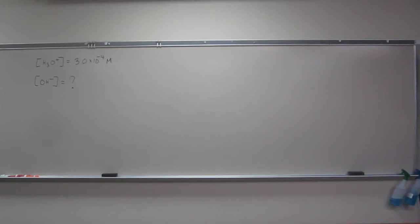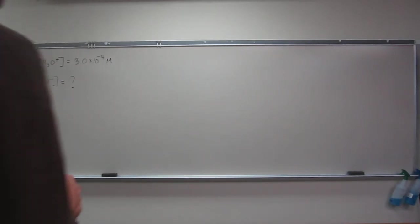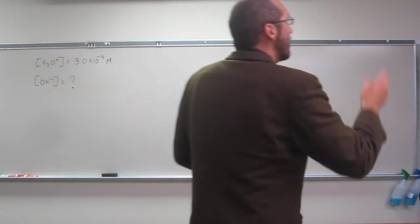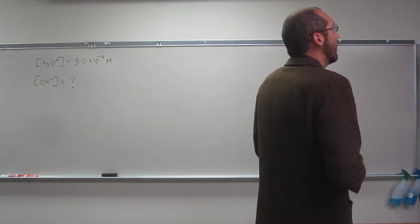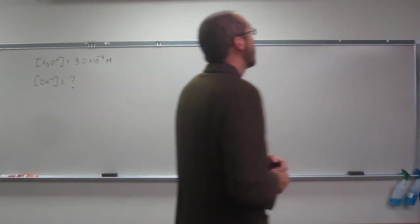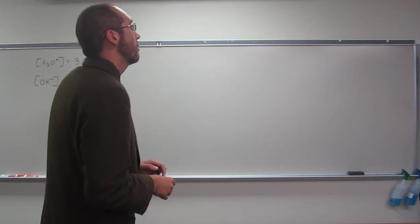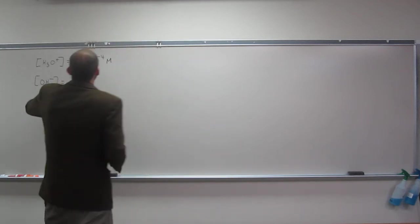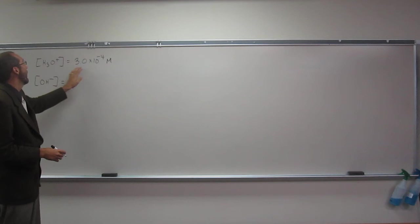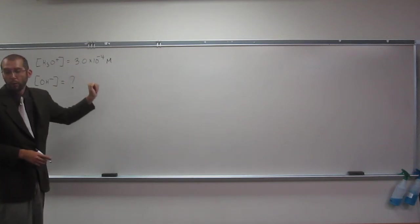Okay, so let's do this problem. So it says, a research chemist adds a measured amount of HCl gas to pure water at 25 degrees Celsius and obtains a solution with the hydronium ion concentration as 3.0 times 10 to the negative 4 molar.